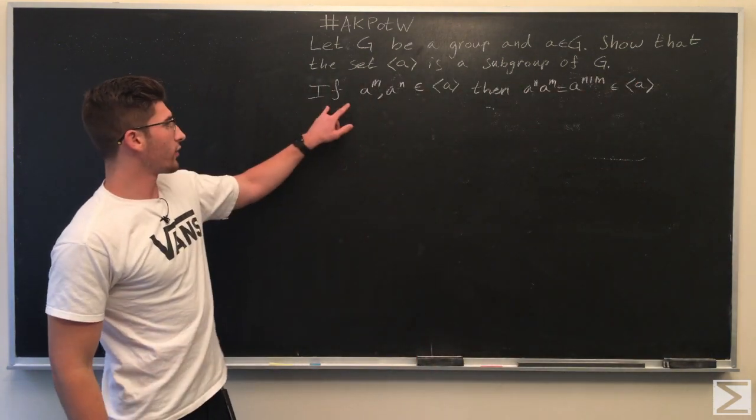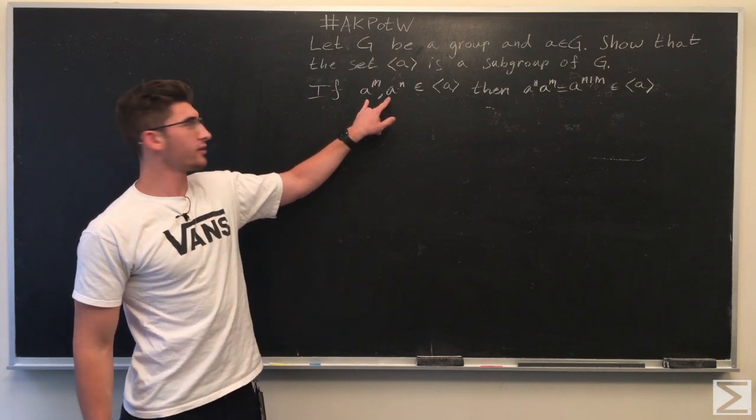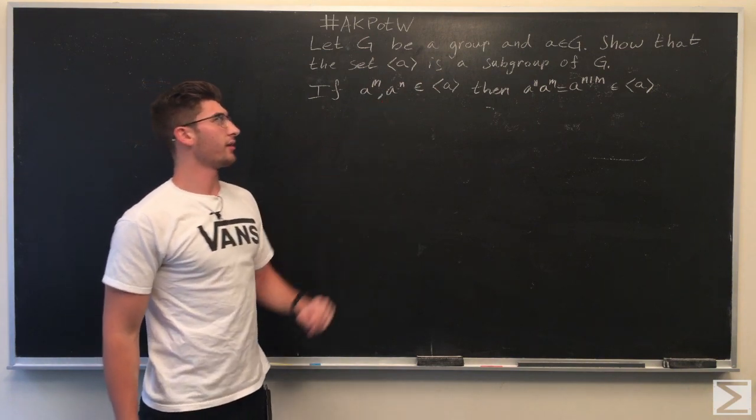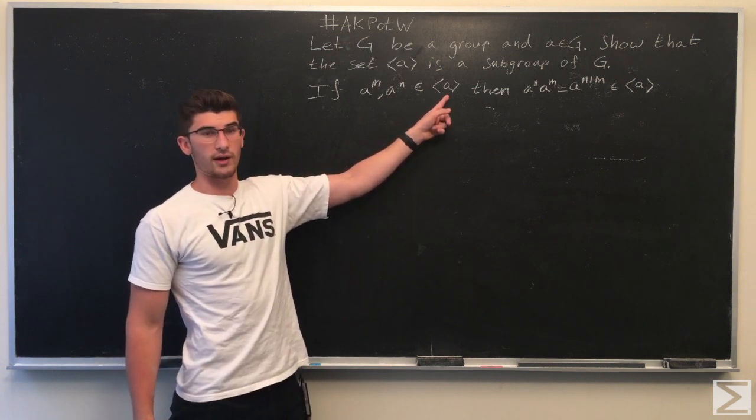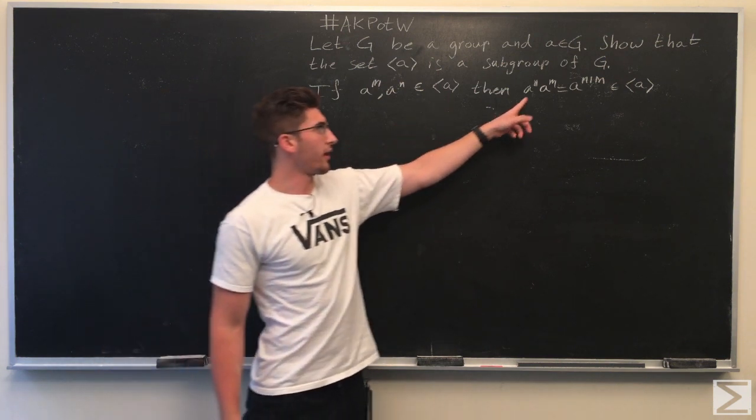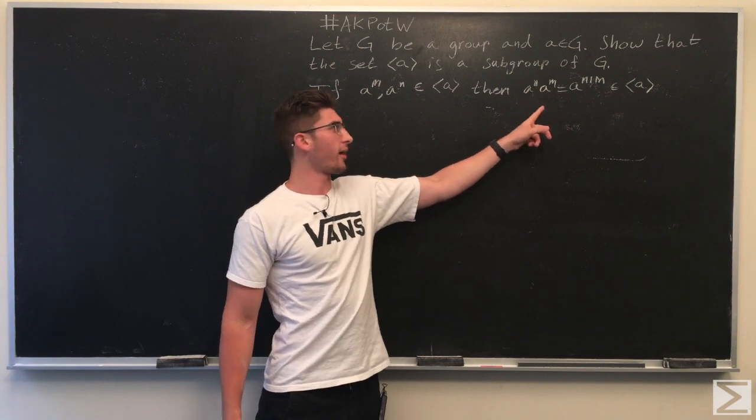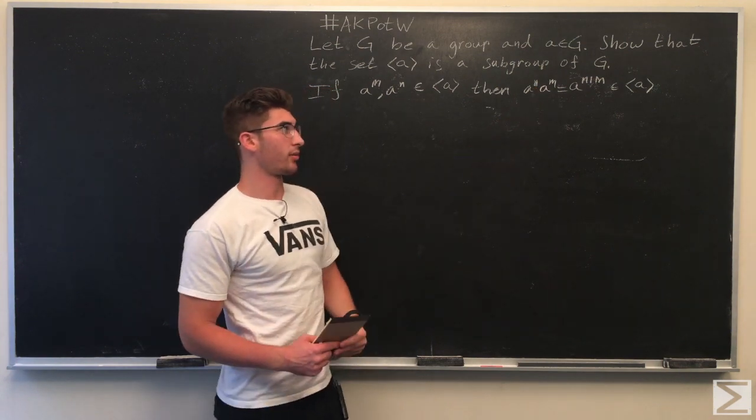First, if we have two elements, A to the M and A to the N, that are both elements of the set of things generated by A, then A to the N times A to the M equals A to the N plus M,